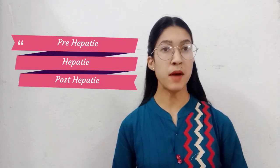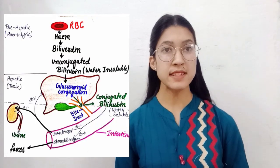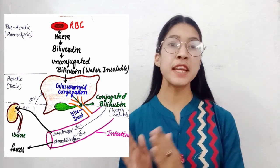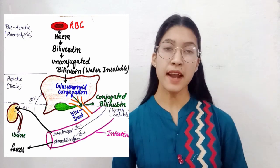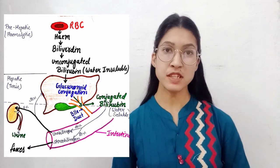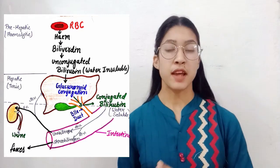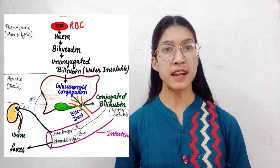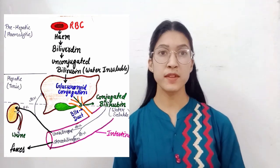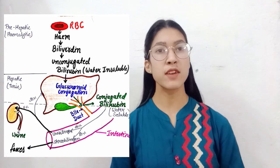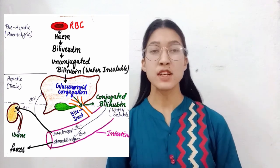Before discussing the Van den Bergh reaction, we should know the general physiology of the liver. In the diagram shown on screen, there are three levels: the pre-hepatic level, the hepatic level, and the post-hepatic level. Any hepatic disorder can occur at these three levels. We all know that a normal level of hemolysis always occurs in the body.